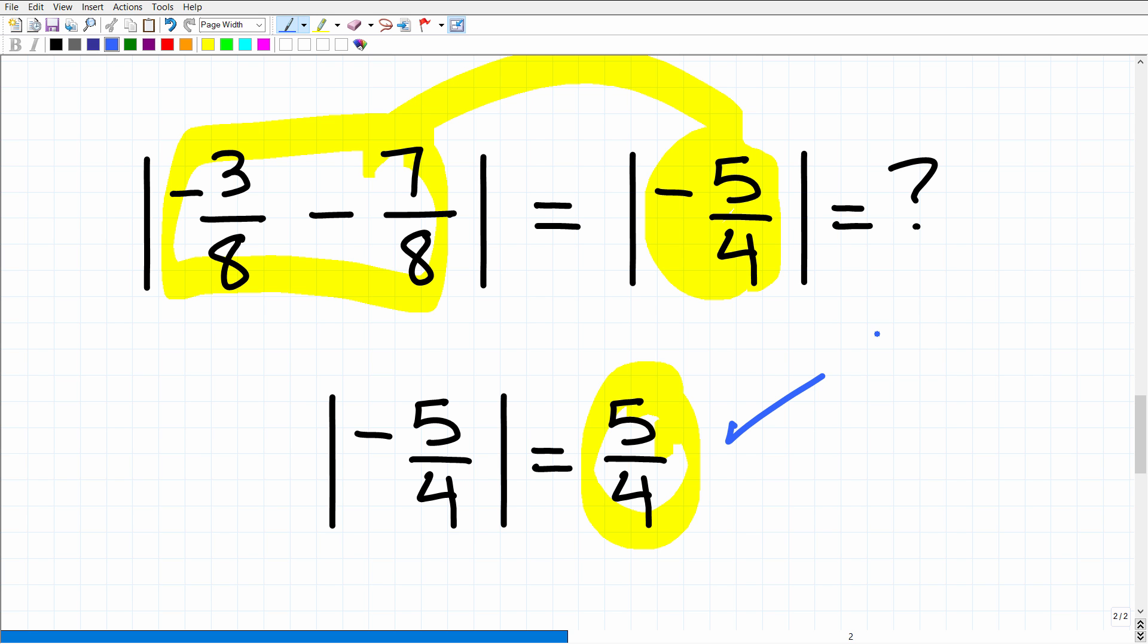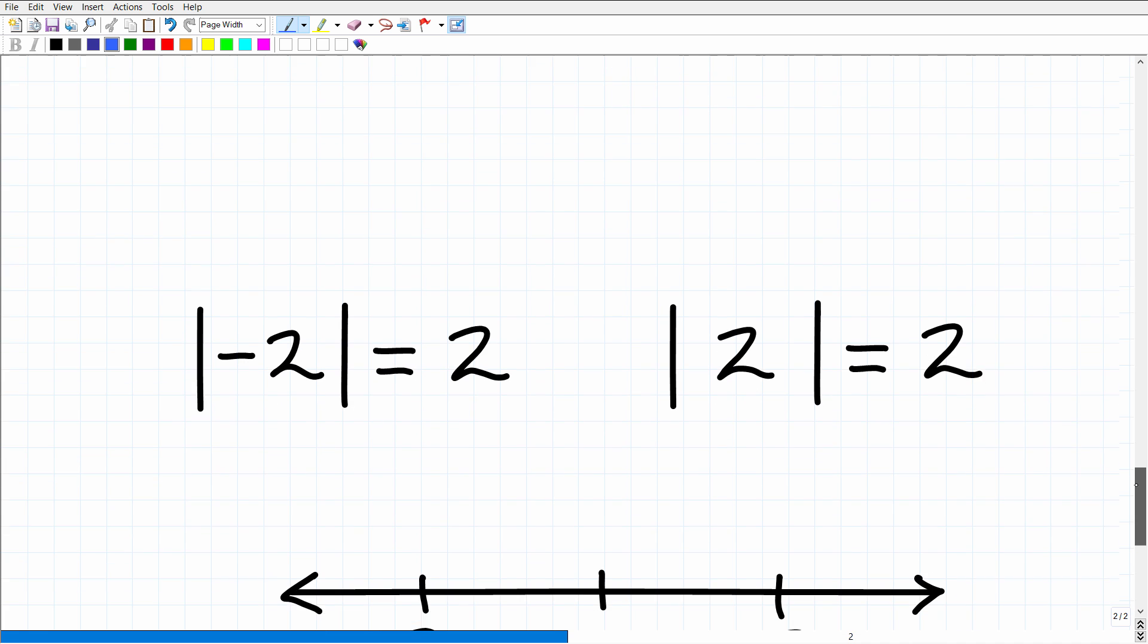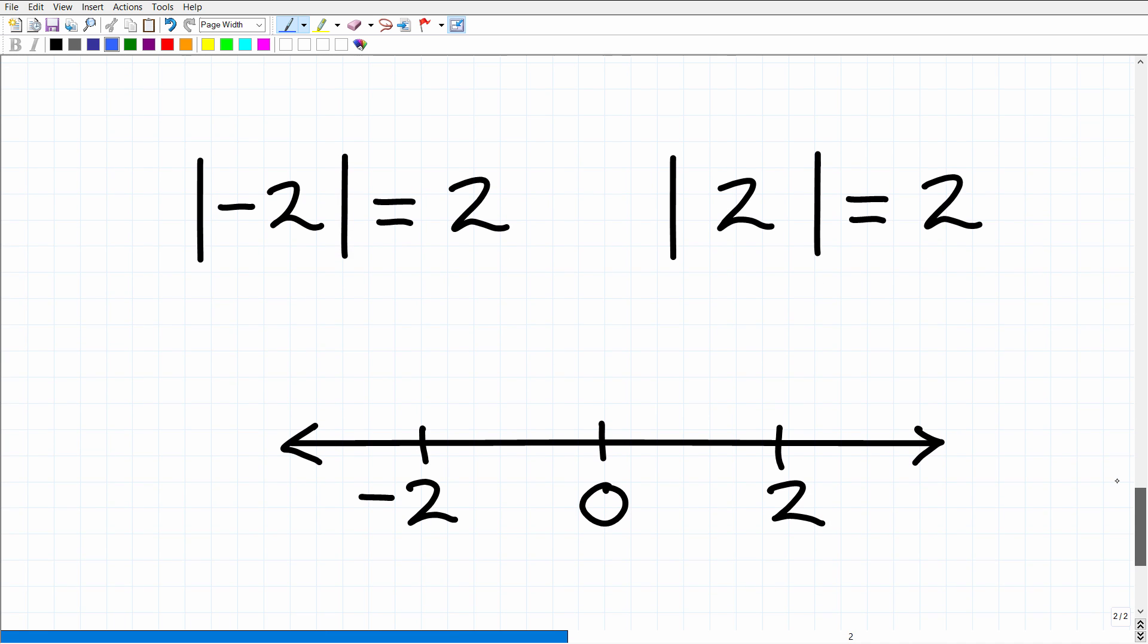But really, what is absolute value? Let's go ahead and just quickly review this right now. So absolute value is the distance a number is from zero. So here, let's take a look at this right here first.